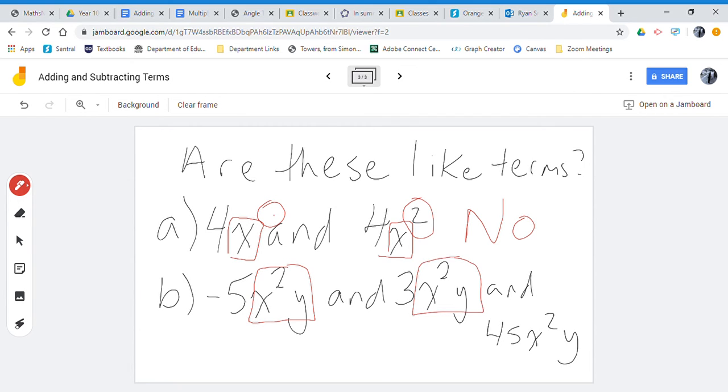Are all three of these like terms? So are their pronumerals and powers all the same? x squared y, x squared y, and x squared y. Yes they are the same, so this would be yes, that all three of these would be considered to be like terms.